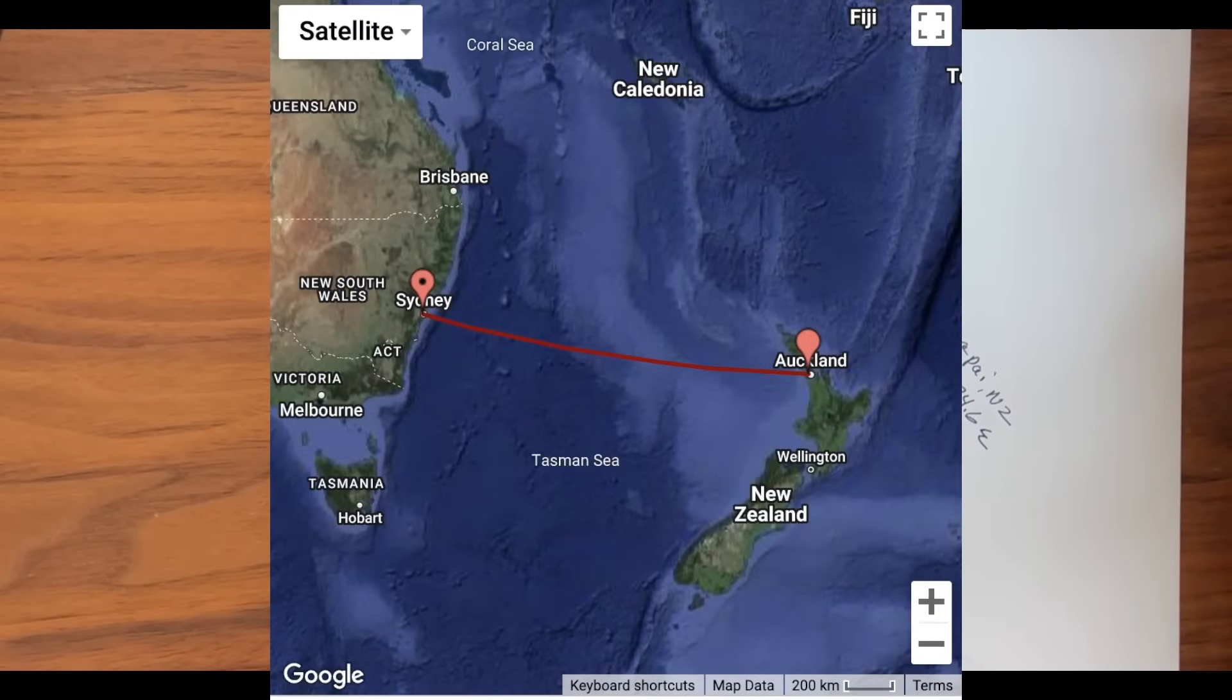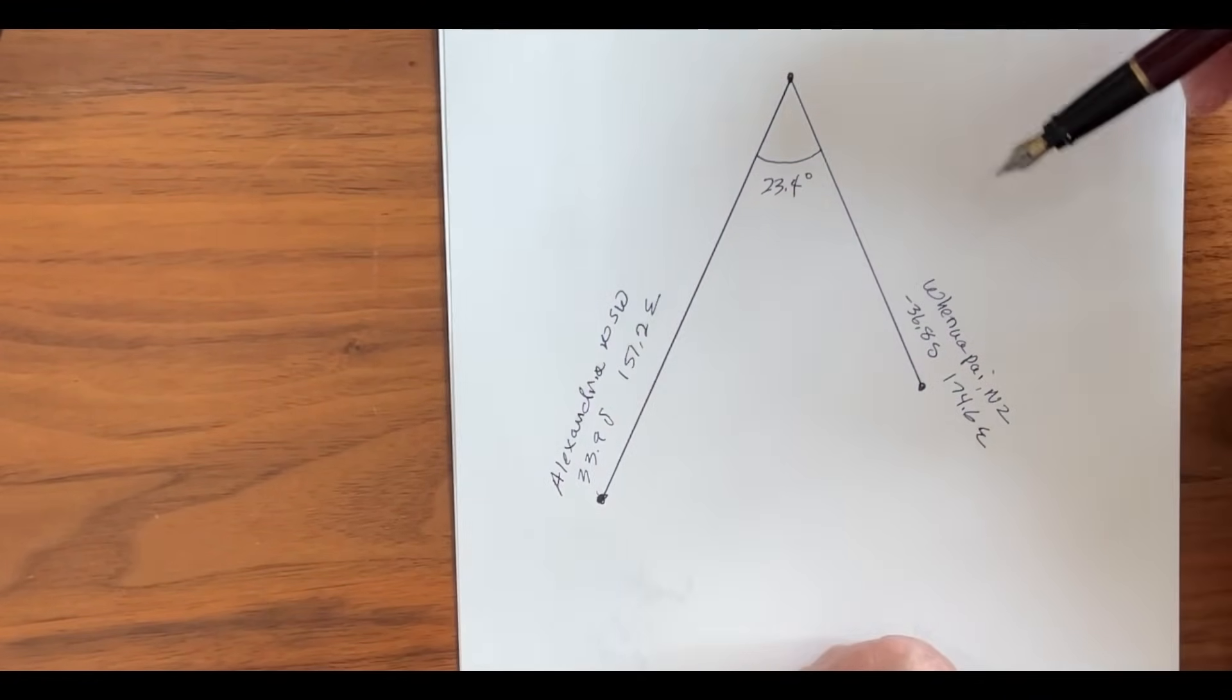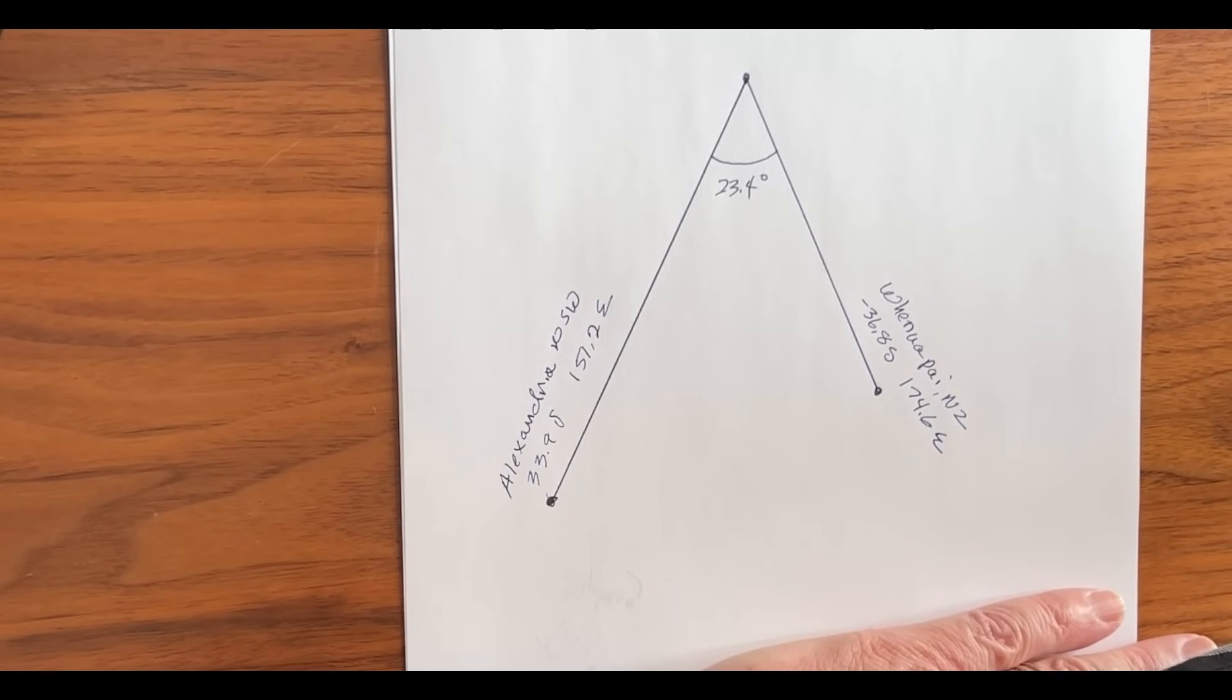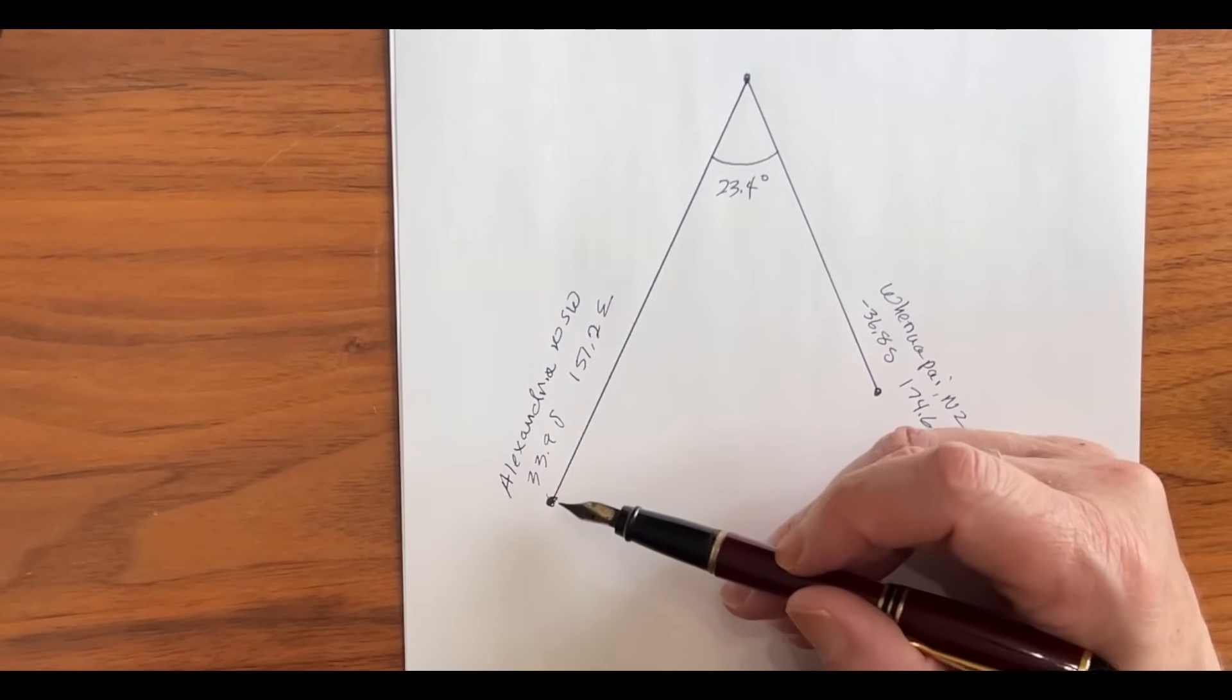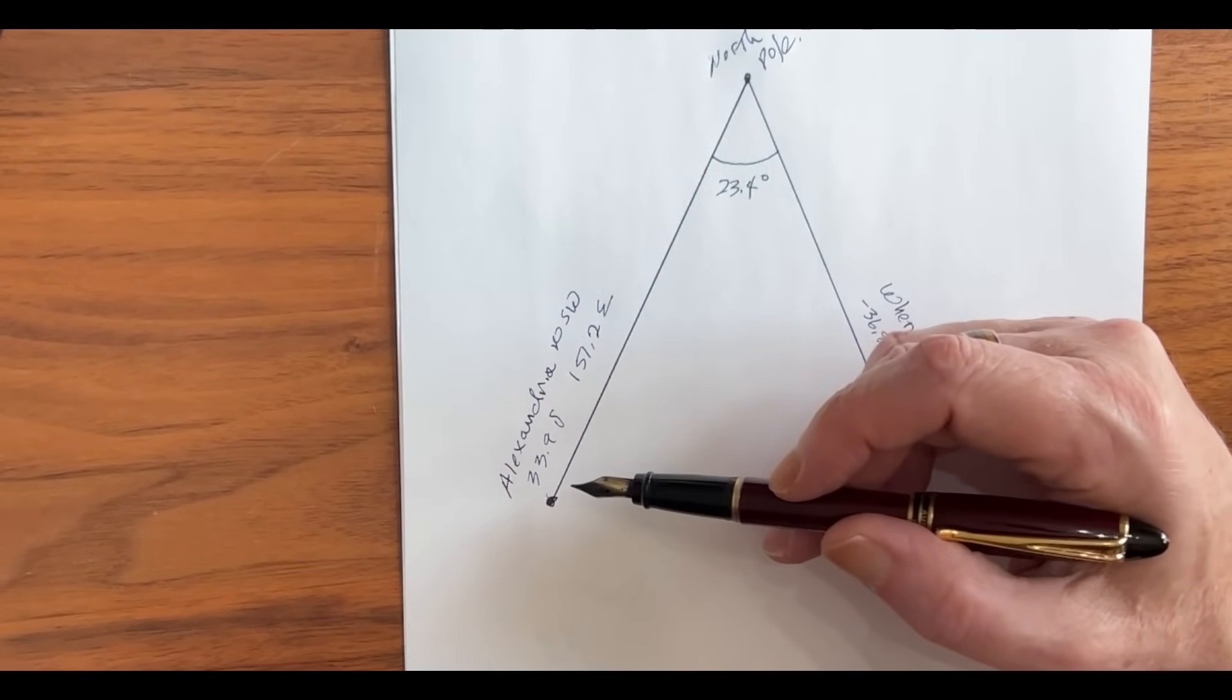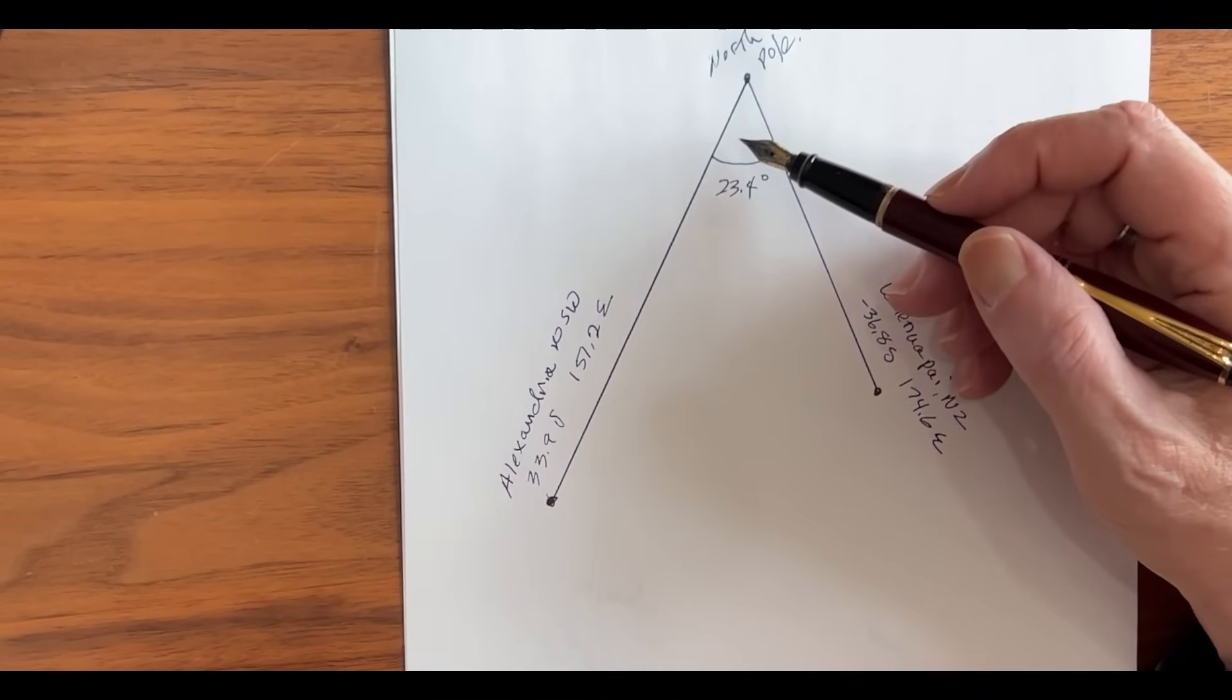Now this is one segment of that Southern Cross Cable network. It goes basically from Sydney to Auckland. Specifically, it goes from Alexandria, New South Wales, to Takapuna, New Zealand. So how do we determine how far it is on a flat earth between Alexandria and Takapuna? Since this is a flat surface, we can use Euclidean geometry. If we draw a line from Alexandria to the North Pole and calculate the number of degrees between Alexandria and the North Pole, we can calculate the length of this side of a triangle.